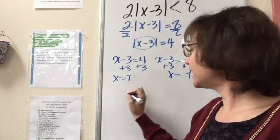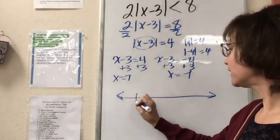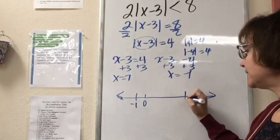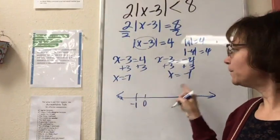That's going to divide my number line into three intervals. I'm going to have a value here at negative 1. Let's go ahead and put 0 on here. And then 7 is going to be right here. So I have these two boundary points.